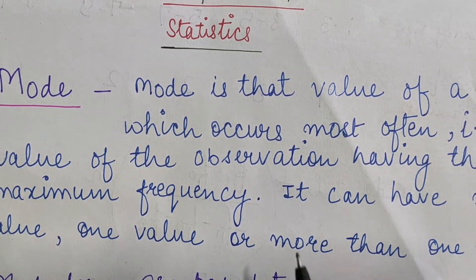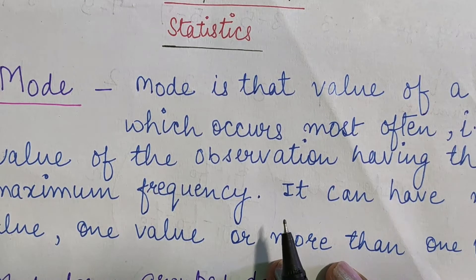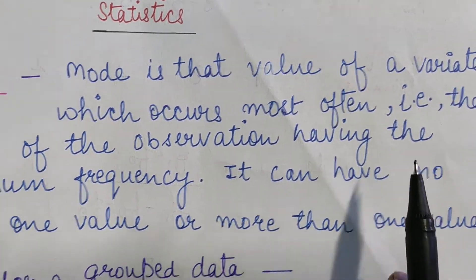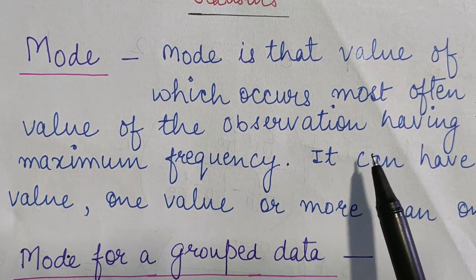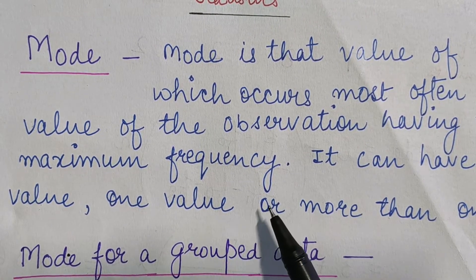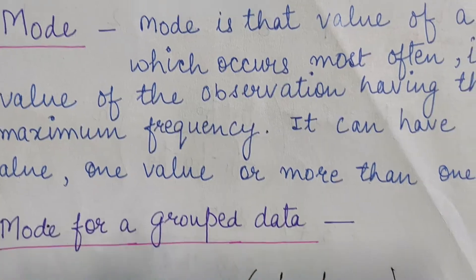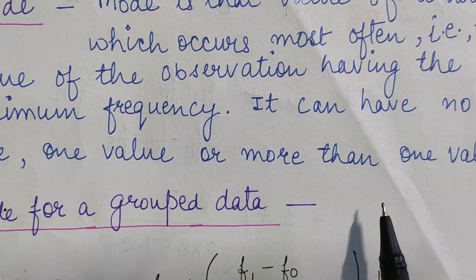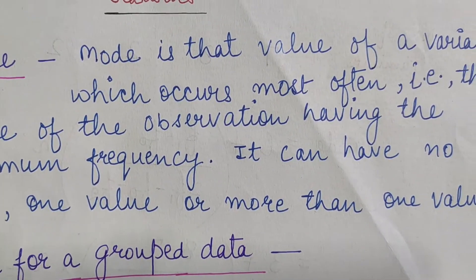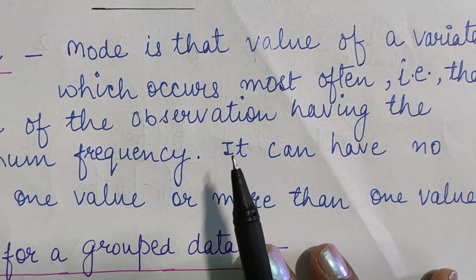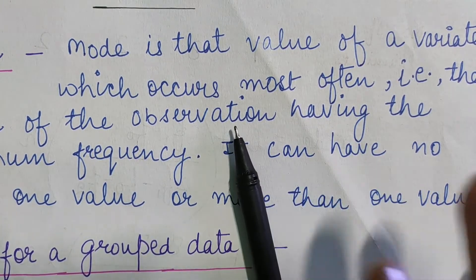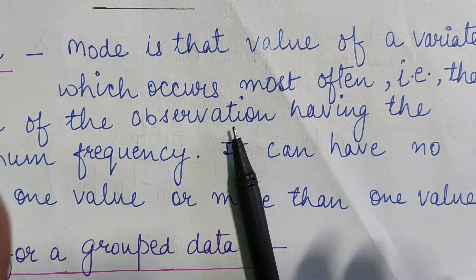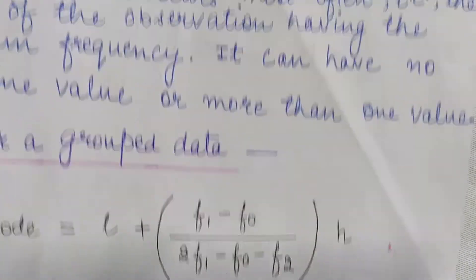So what is mode? Mode is that value of a variate which occurs most often — that is, the value of the observation having the maximum frequency. It can have no value, one value, or more than one value. Basically, mode is the value which has maximum frequency, the data value which is repeated the most.